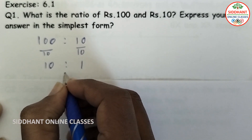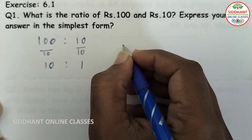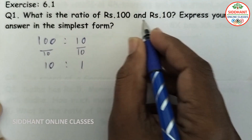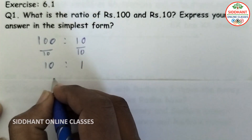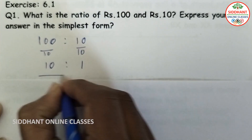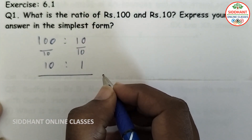So the ratio of rupees 100 to 10 in the simplest form will be 10 is to 1.